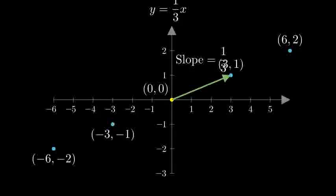Now, let's connect these points to form our line. Notice how our line passes through the origin and follows the slope of one-third, meaning it rises one unit for every three units it runs.